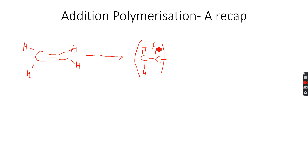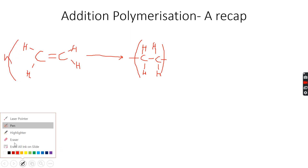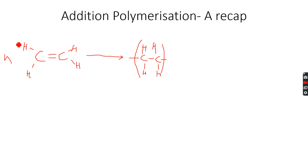The double bond in ethene breaks, and as it breaks it allows each carbon atom to form one more bond. Because of this, several ethene molecules — let's say n ethene molecules — form one long single polymer chain made of n units of ethene. This is called polyethene, and what we've shown is called the repeat unit of polyethene — a single ethene molecule once its double bond has broken to form the polymer.